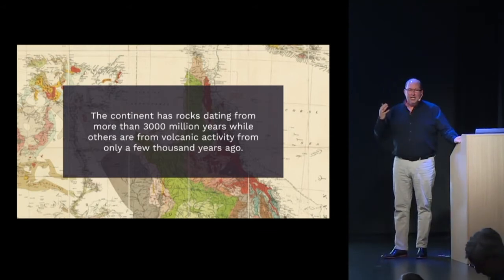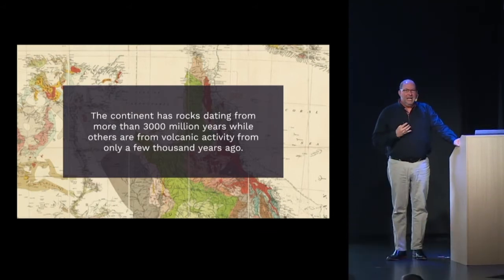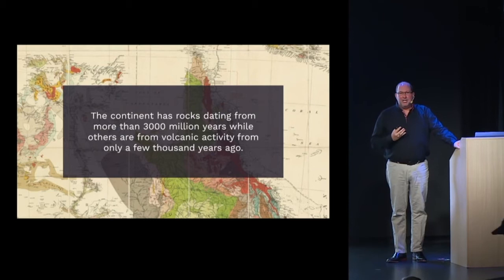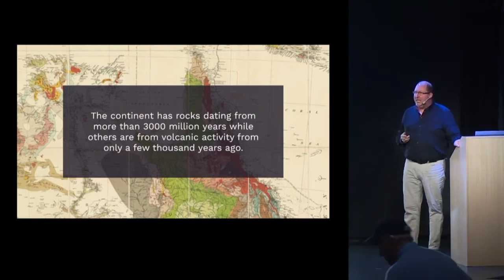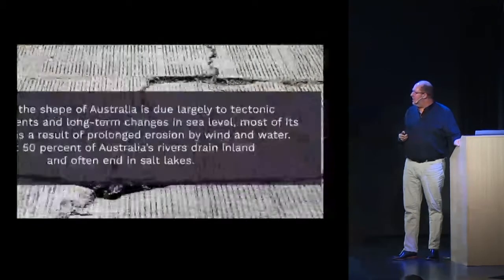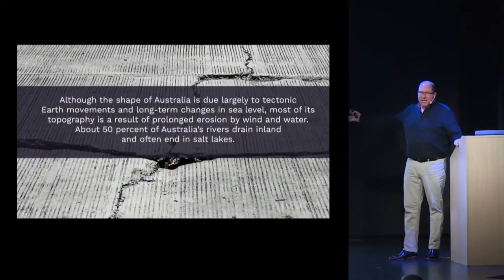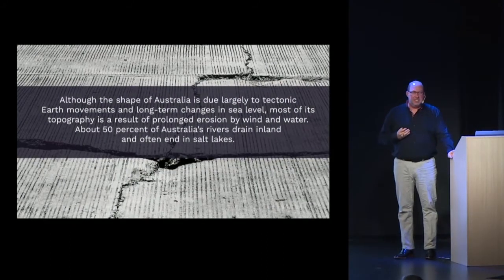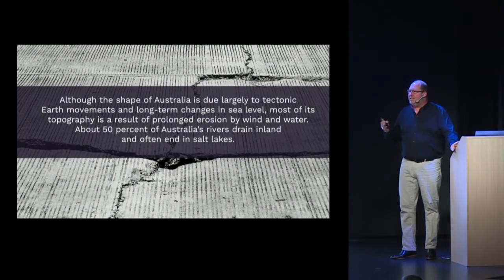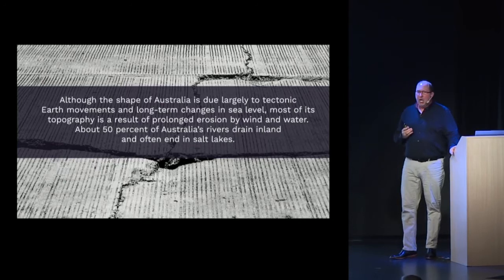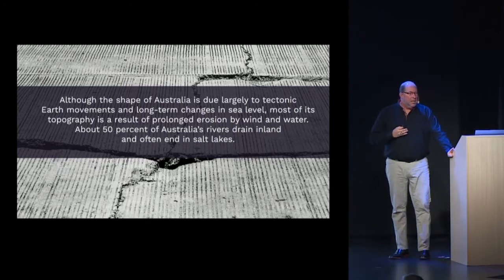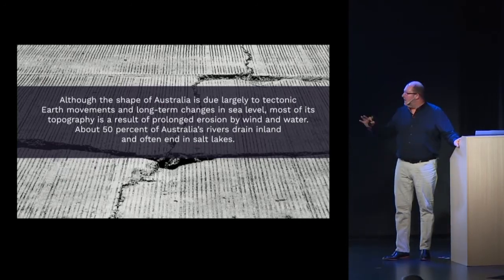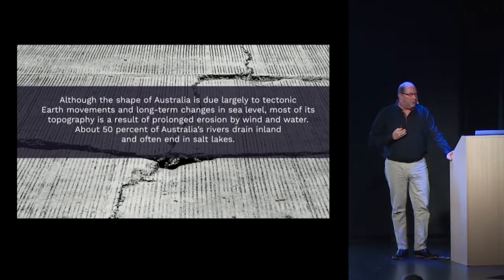You'll see new things happening in geologic formations, as well as incredibly old structures dating back millions of years. The shape of Australia is largely due to tectonic plates, tectonic earth movements, and long-term changes in sea levels. But most of the topography of the land is caused by wind and water erosion.